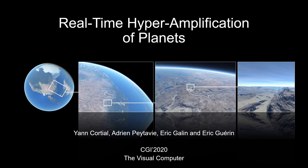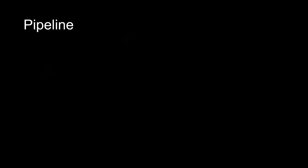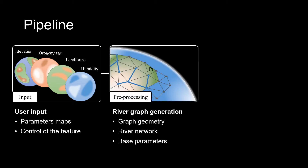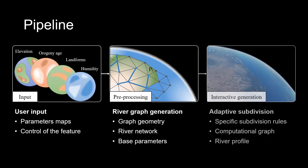We present a new method for the real-time hyperamplification of planets. The method proceeds in two major steps. Given a low-resolution input representing the high-level controls over the generation, an offline pre-processing step builds a coarse river network and consolidates the terrain parameters. The final high-resolution planet can be visualized in real-time. Our hyperamplification method relies on adaptive subdivision rules.